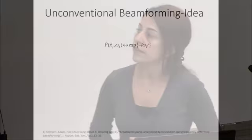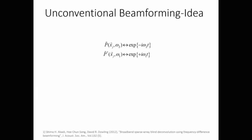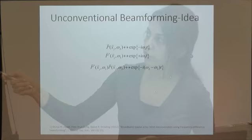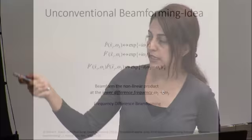Now I want to introduce a new beamforming technique to resolve this problem. The idea is simple: if I have the received signal P at frequency ω₂, the phase contains -iω₂t. If I take P at ω₁ but as complex conjugate, the phase contains +iω₁t. Multiplying these two together, the phase becomes the frequency difference (ω₁ - ω₂) times t. Although ω₁ and ω₂ are high frequencies in the bandwidth, their difference can be small. Instead of beamforming P, if I beamform this product at (ω₂ - ω₁), I am manufacturing lower frequency information. This new beamforming technique is called frequency difference beamforming.